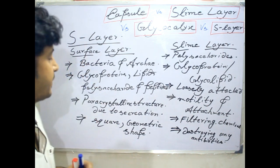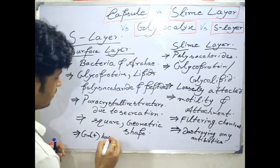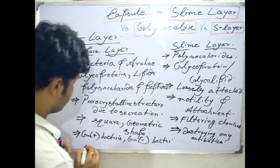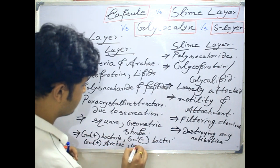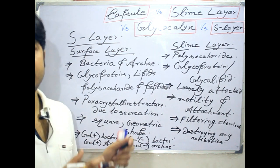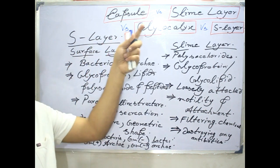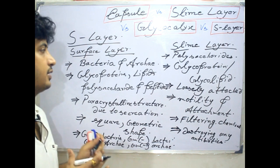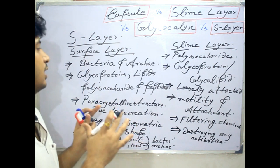This surface layer may be present in gram positive bacteria, gram negative bacteria, and gram positive archaea. It is a very important part of the archaea system — outside the cell wall you can directly see the surface layer, not the capsule or slime layer. So in the case of archaea it is a very important aspect of their cellular organization where you can observe the surface layer.